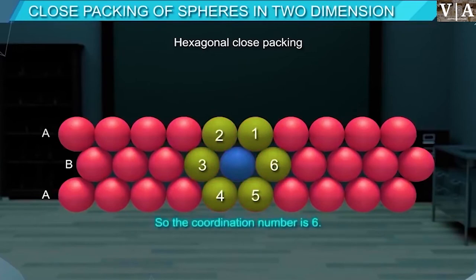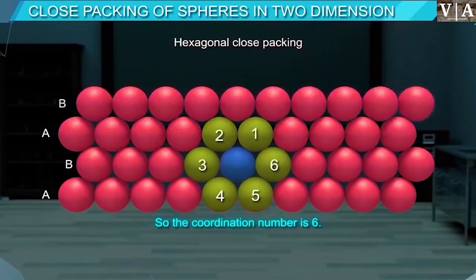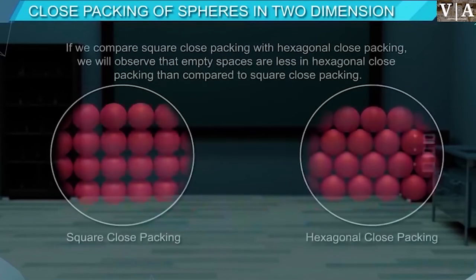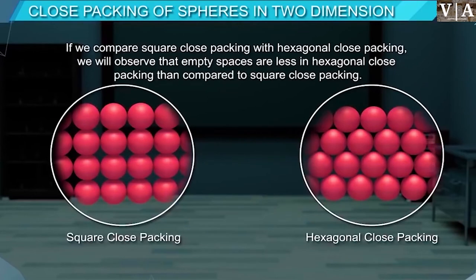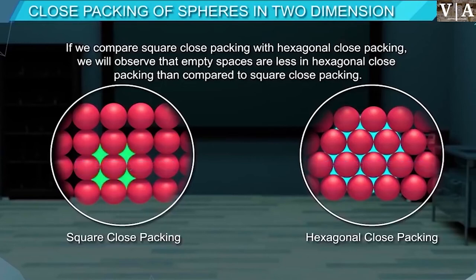On placing the fourth layer, we observe that the fourth row of spheres is aligned with those of the second layer. This arrangement is known as ABAB type or hexagonal close packing. Comparing square close packing with hexagonal close packing, the empty spaces in hexagonal close packing are less than those in square close packing. These empty spaces between the spheres are known as voids, and their role in packing efficiency is what we are going to discuss.